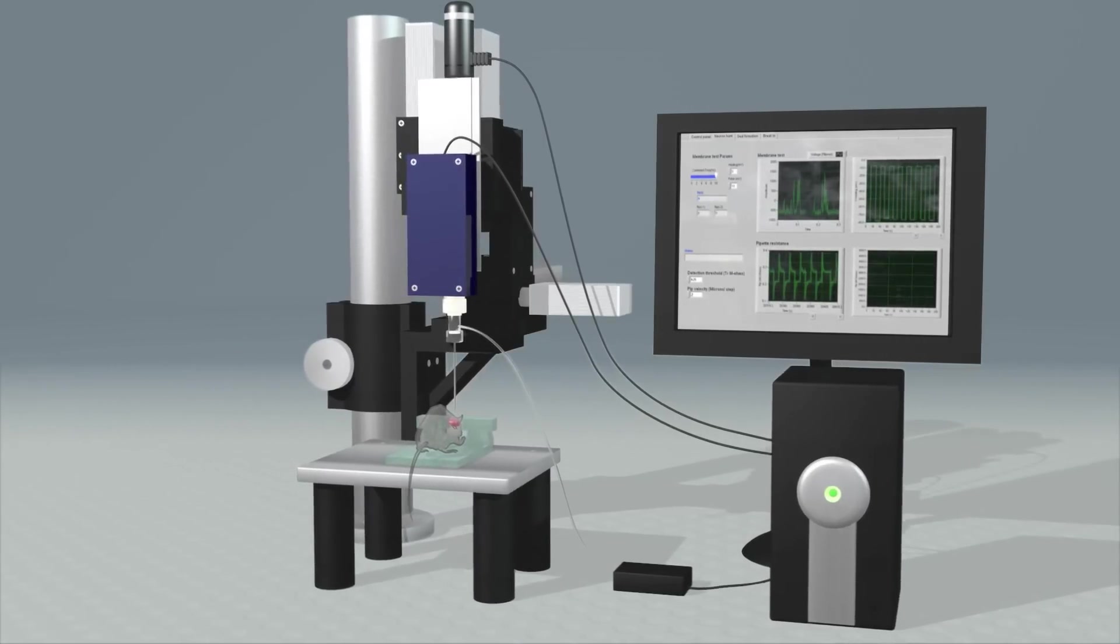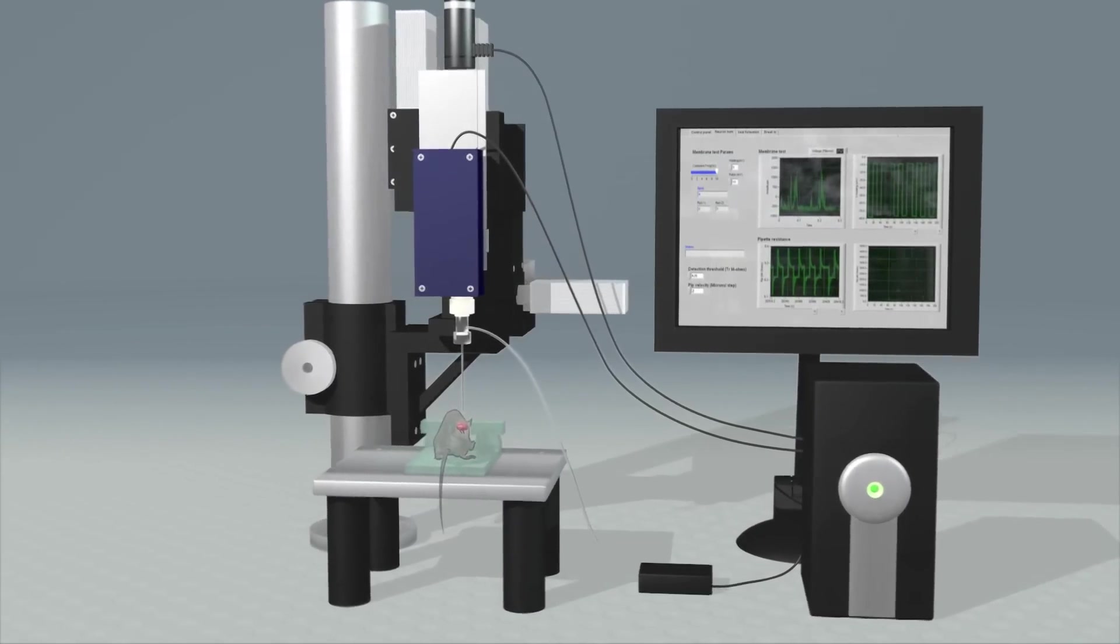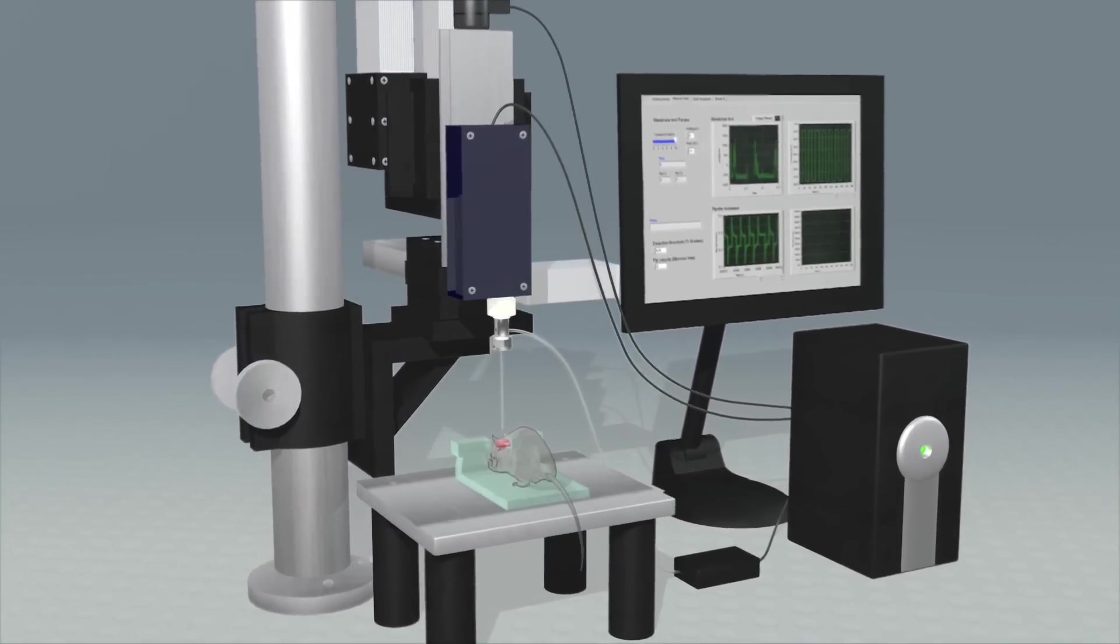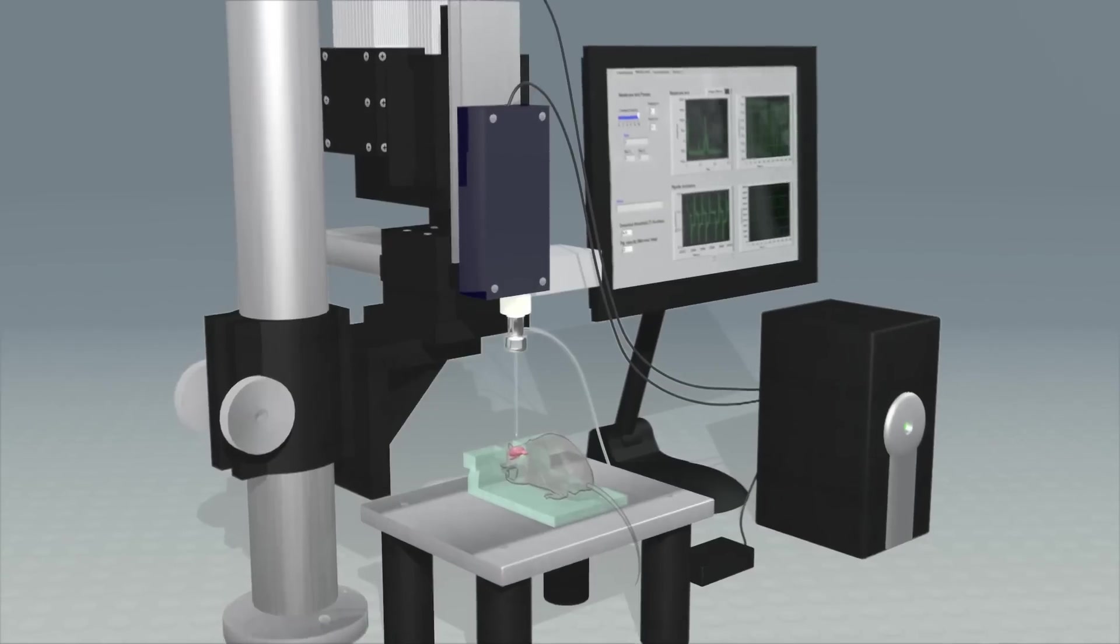A team of mechanical engineers, neuroengineers, and neuroscientists has now developed a robot that can analyze the electrical and molecular properties of single cells in the living mammalian brain.